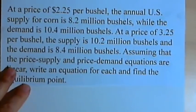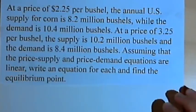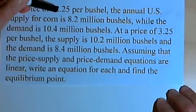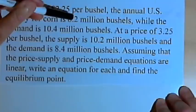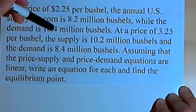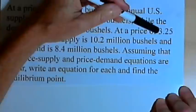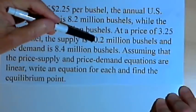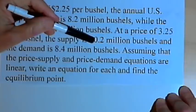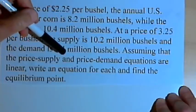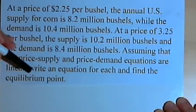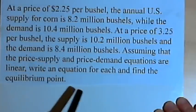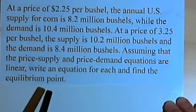Here's the problem we're going to deal with. At a price of $2.25 per bushel, the annual US supply for corn is 8.2 million bushels, while the demand is 10.4 million bushels. At a price of $3.25 per bushel, the supply is 10.2 million bushels and the demand is 8.4 million bushels. Assuming that the price supply and price demand equations are linear, write an equation for each and find the equilibrium point.